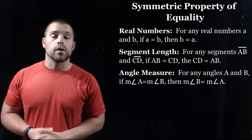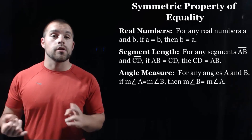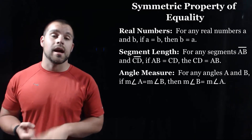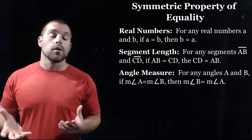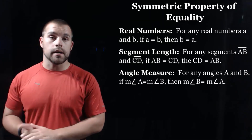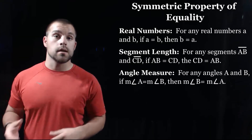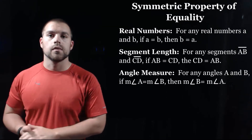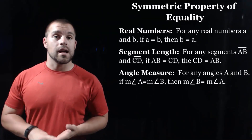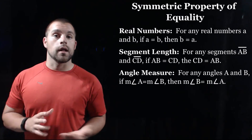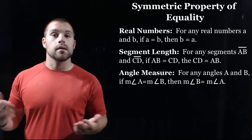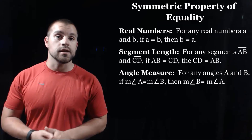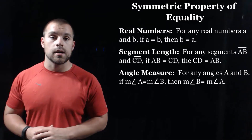Our next new property is called the symmetric property. Again, there's a real numbers case, a segments case, and an angles case. If we're looking at two real numbers A and B, if A equals B, then the reverse has to be true: B equals A. If we're looking at two segments AB and CD, if the length of AB equals the length of CD, then the reverse has to be true — the length of CD equals the length of AB.